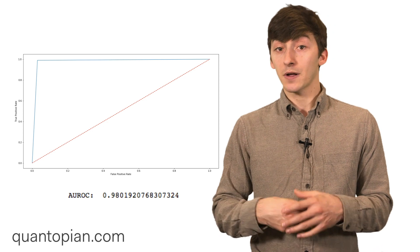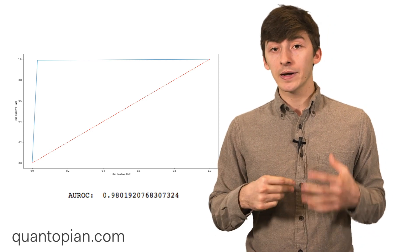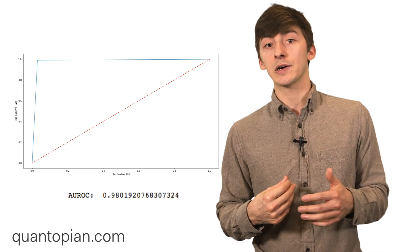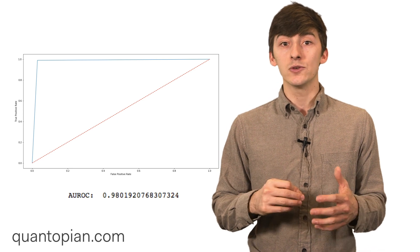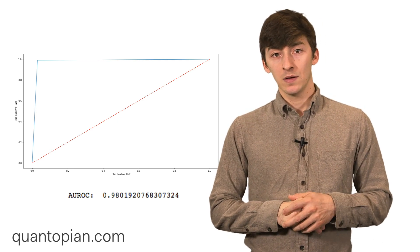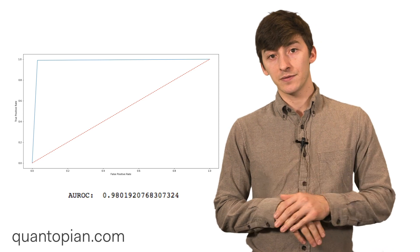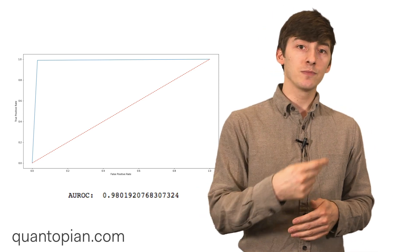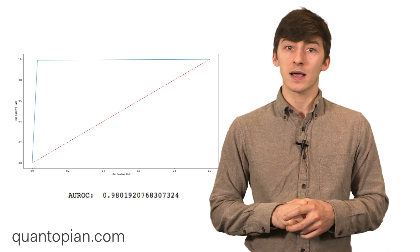There's another method for classifiers that you can use called the area under the receiver operator characteristic curve, or the AUROC. The ROC curve is a plot where you plot the false positive rate on the x-axis versus the true positive rate of the model on the y-axis.